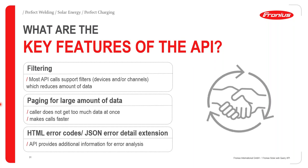Key features of the API include filtering — most API calls support filters that reduce the amount of data queried. For example, you can query only specific parameters like voltage or current levels instead of all inverter data, reducing data usage. Paging is also supported for large data sets so the caller doesn't receive too much data at once, making calls faster. HTML error codes and JSON error detail extensions are also provided for error analysis.